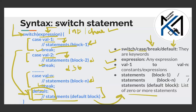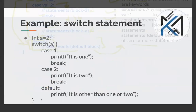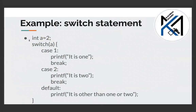Now let's understand an example. If we put integer a equal to 2, then we pass it into the switch. The first case is 1, the second case is 2. Since a equals 2, it matches case 2, and the corresponding block is executed.